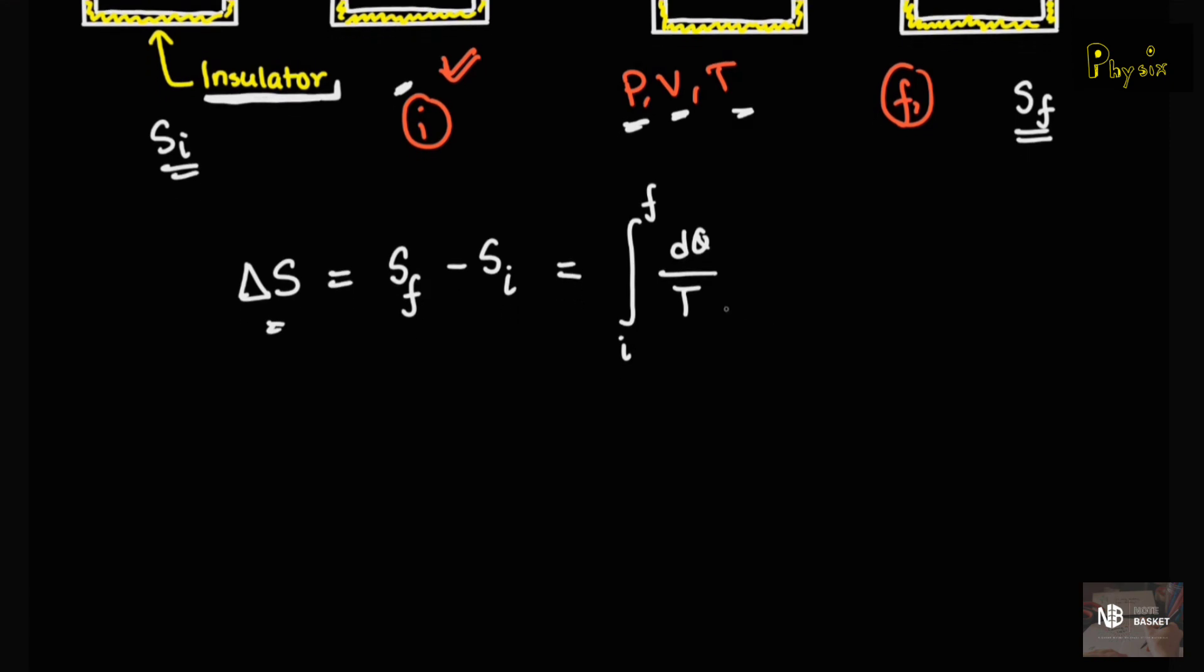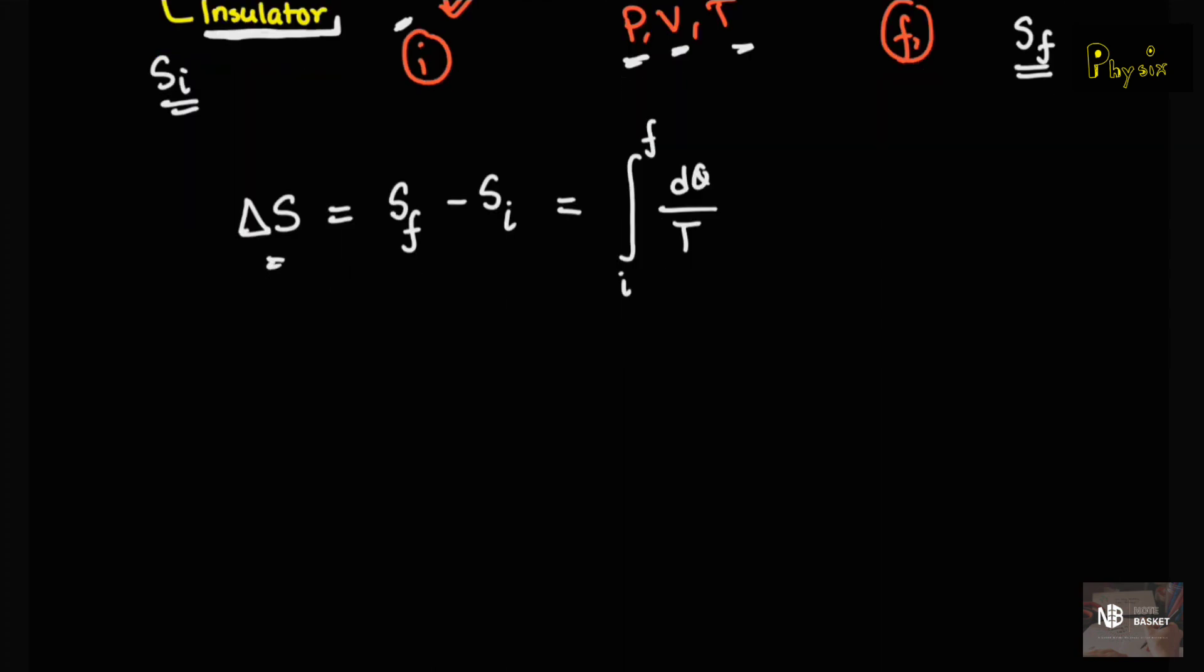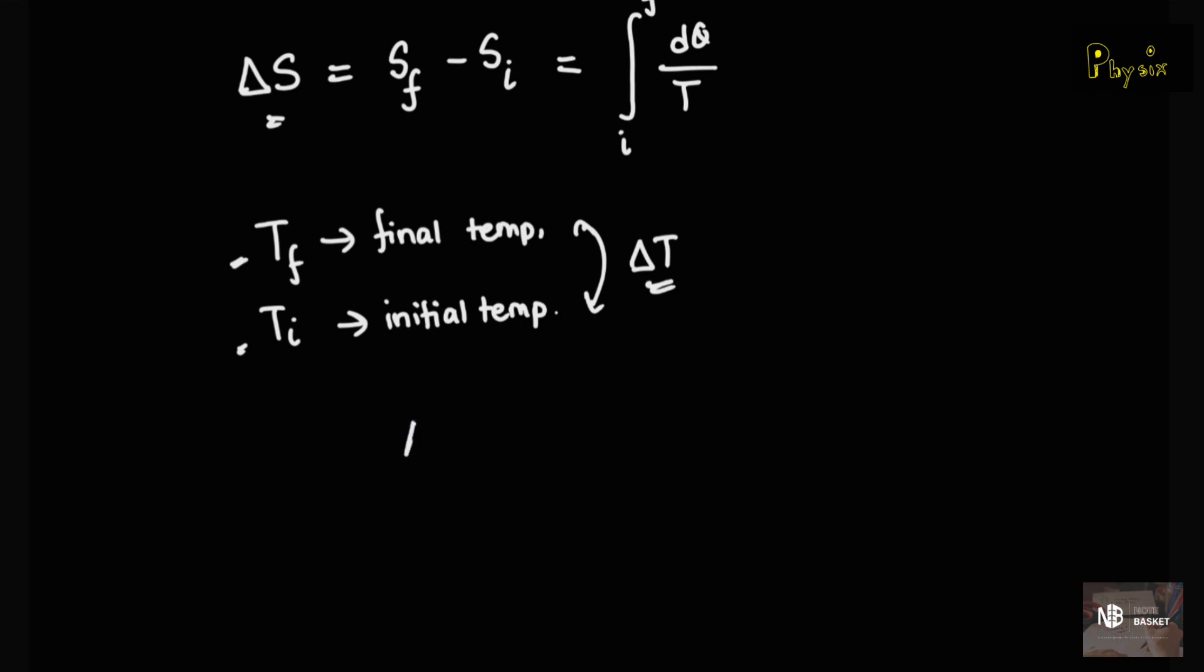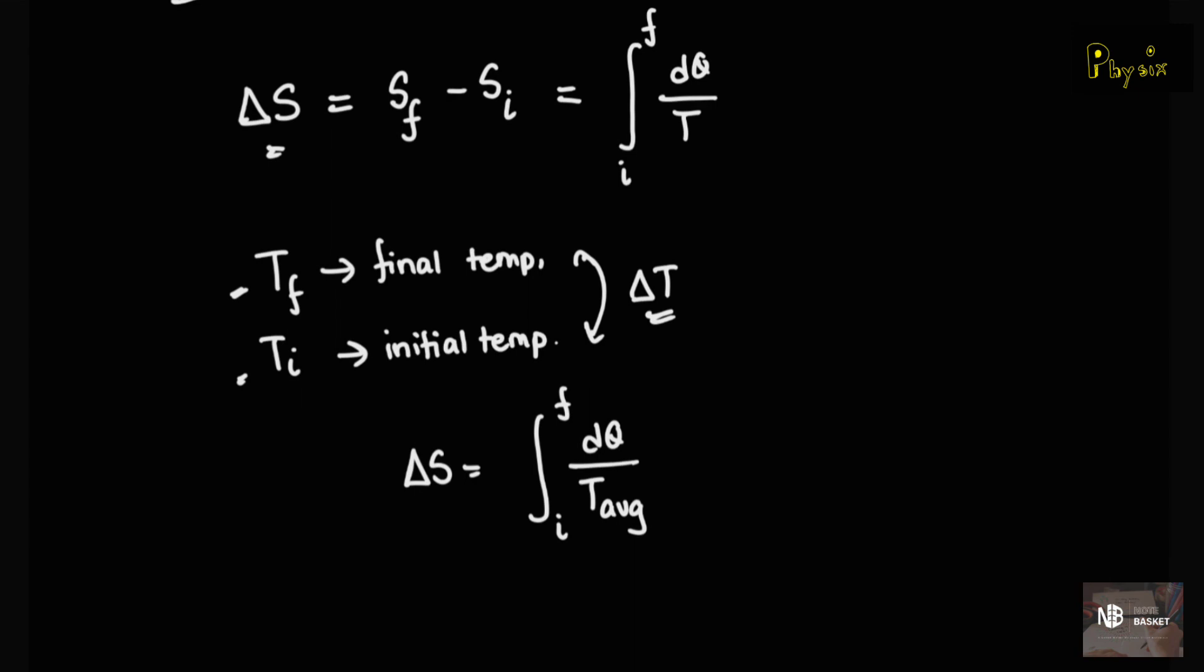Now, we consider that the temperature T over here remains constant. Well, what if it is actually not the case? Let's say that the temperature of the system from initial to final does actually change, and the final temperature is Tf, and initial temperature is Ti. So, we can kind of say that there has actually been a change of temperature, which is we define as delta T. So, we consider that in this case, the change in entropy is basically the average of the final and initial temperatures. So, we define temperature in case of temperature change as delta S is equal to F over I, the limits, and over here, this is T average. Well, this is the mathematical explanation of entropy for today.